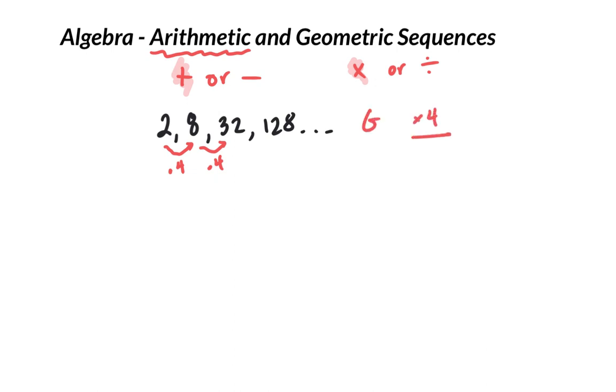But if it's a harder pattern or one you don't see right away, you can always take a term like the second term and just divide it by the first term. You can say, well, eight divided by two should give me my what we call common ratio.